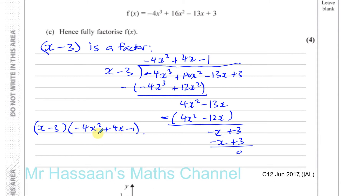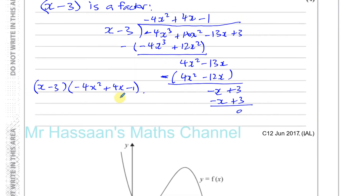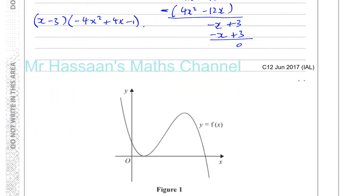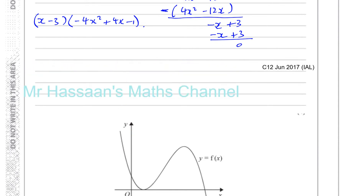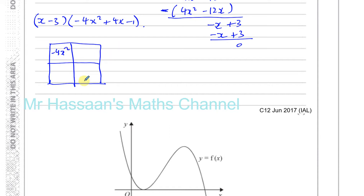So now we need to try to factorize this last part and see if it does factorize. To factorize something like this, I like to use the grid method. You have here minus 4x squared and here minus 1 — these two are the outer terms. And these are the terms that the middle term splits up into, so we've got to find two numbers.